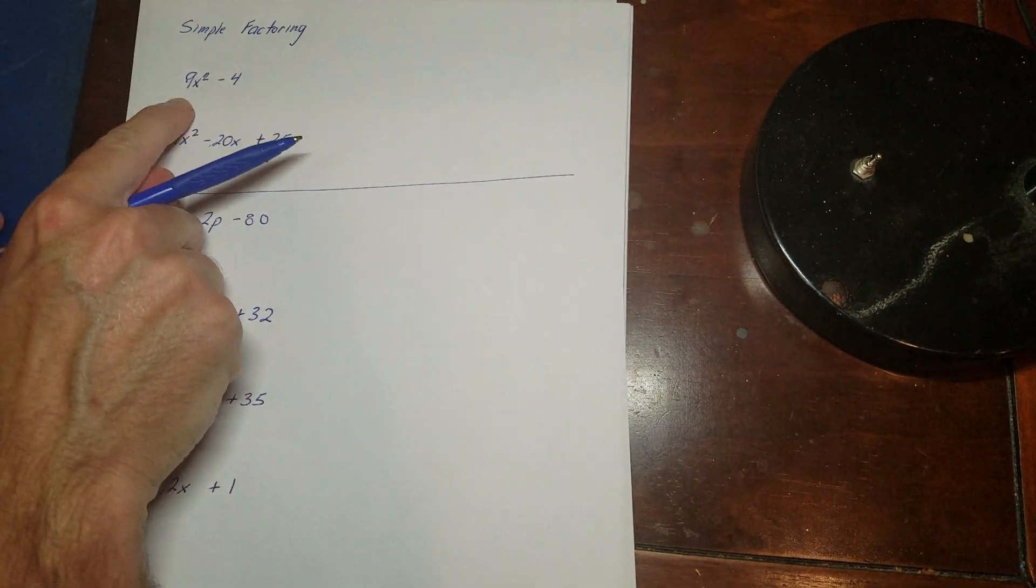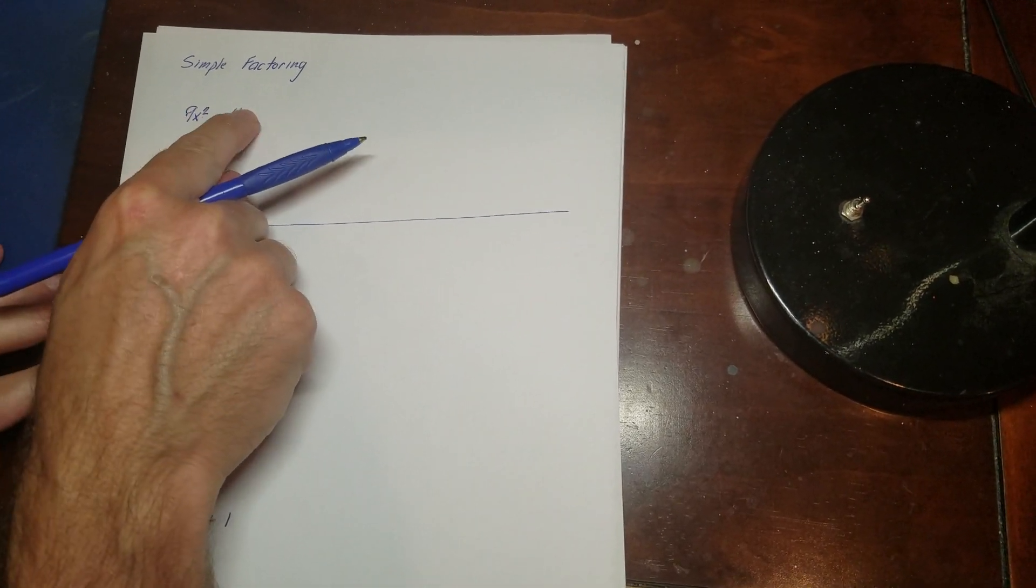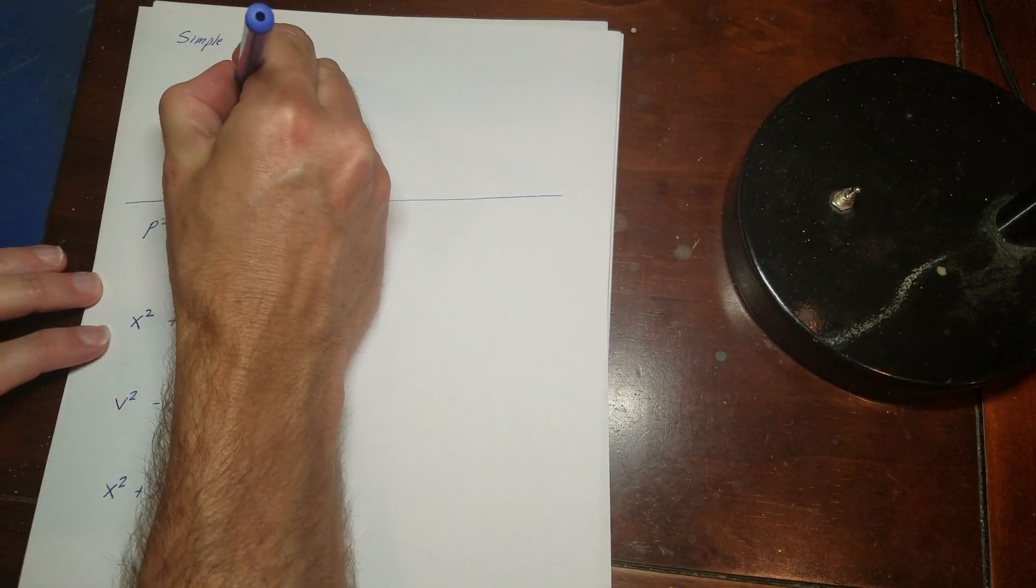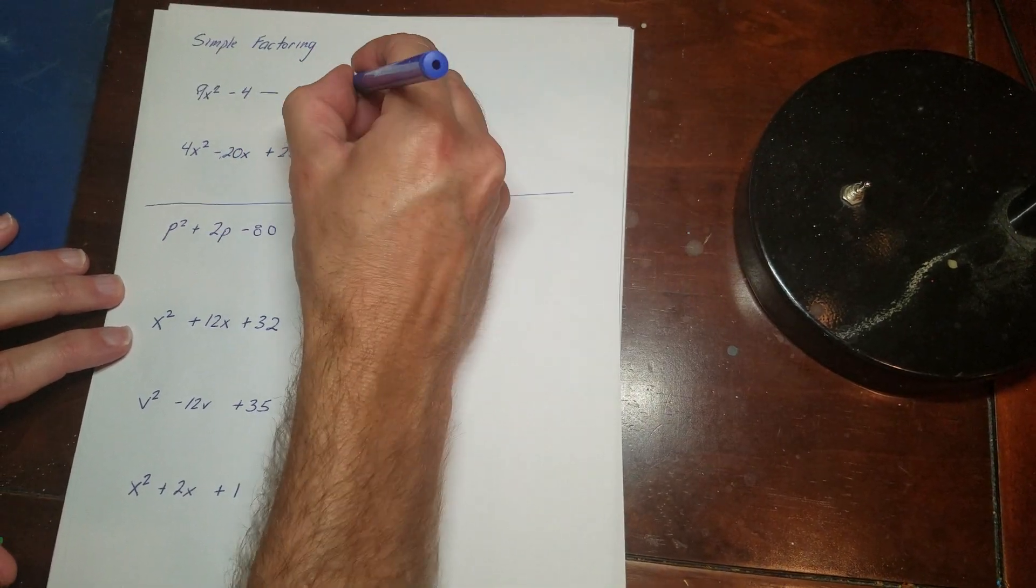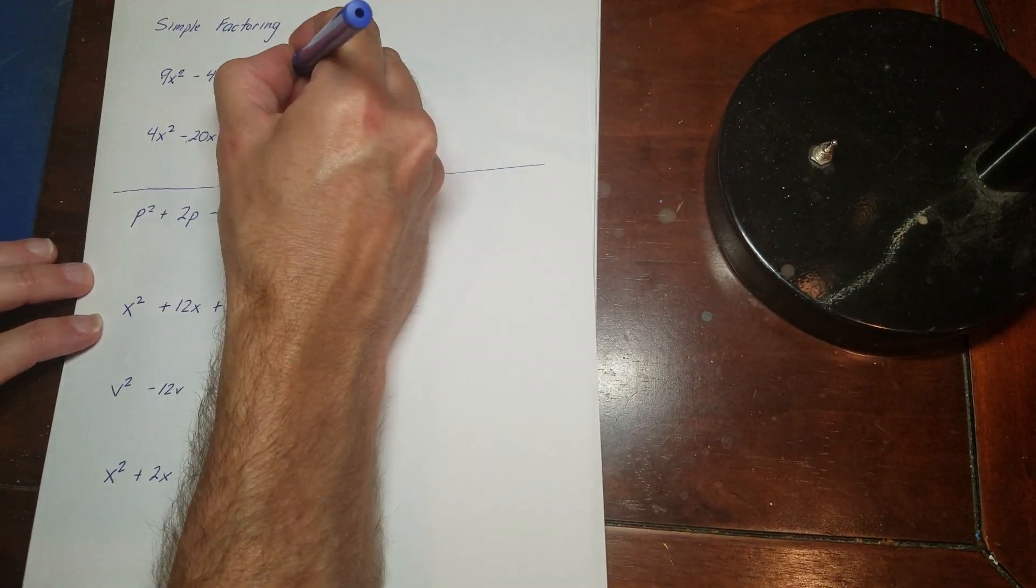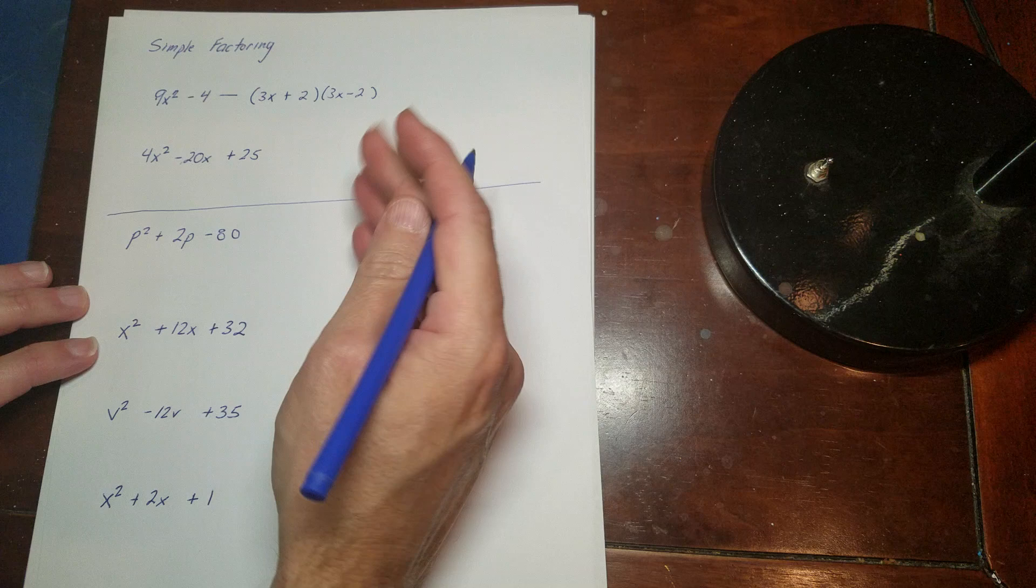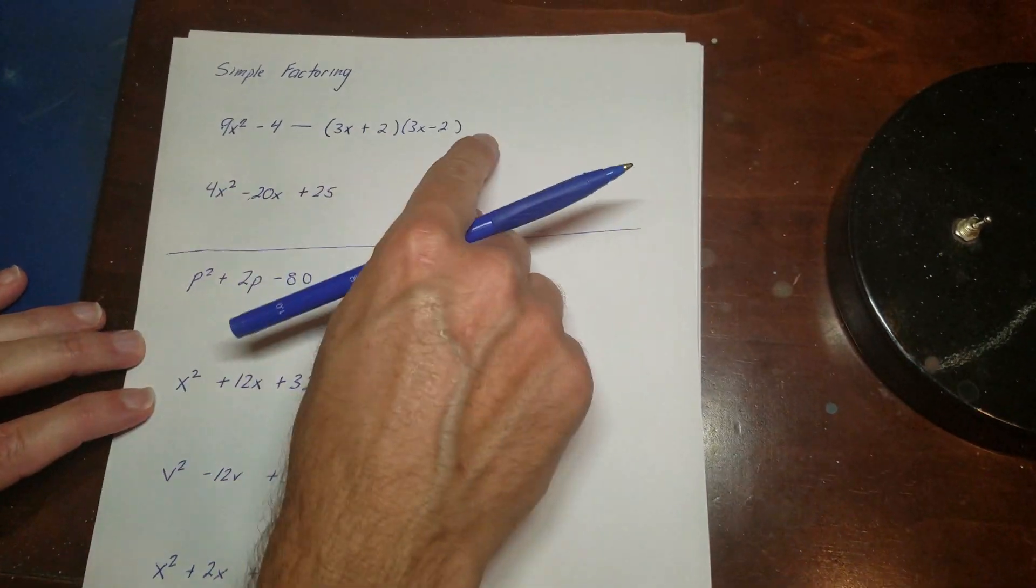So the first one here, this is a difference of squares. It's a difference of squares because you have a square here, a square here, and it's a difference between them. And the pattern for that is just to do the square root of 9 and the square root of 4. One's a plus and one's a minus. That's how you do it. You just know the pattern. You recognize you have two squares, a difference of squares, and you write out the answer.